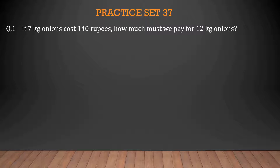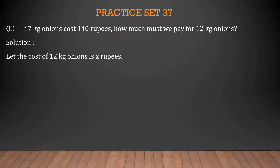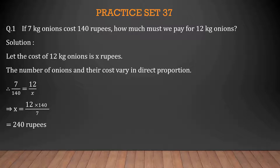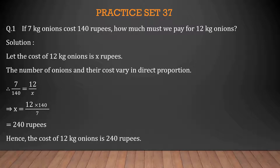Practice set 37, first question. If 7 kg onions cost 140 rupees, how much must we pay for 12 kg onions? Solution: Let the cost of 12 kg onions be X rupees. The number of onions and their cost vary in direct proportion. So 7/140 = 12/X. Therefore X = 12 × 140 ÷ 7 = 240 rupees. Hence, the cost of 12 kg onions is 240 rupees.